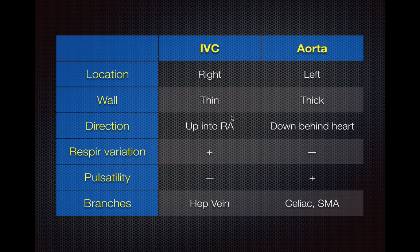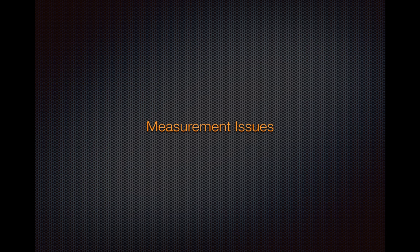Use as many of these differences as you can to make sure you're measuring the right tube. Personally, I find the most useful confirmations are seeing the vessel enter the right atrium and identifying the hepatic vein. To summarize: the IVC is typically on the right and the aorta on the left; the IVC has a thinner wall while the aorta is thicker; they differ in direction, respiratory variation, pulsatility, and branching pattern. Use as many of these features as are helpful to you.